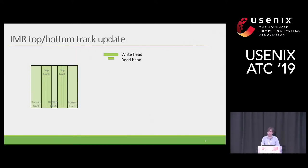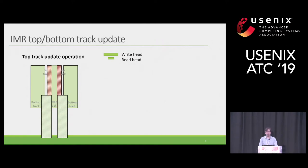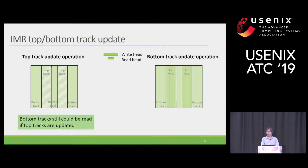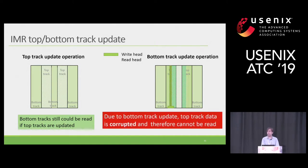Let's look at the constraint. For a top track update, as you can see in the figure, updating the top track rewrites onto the middle bottom track. However, because in IMR the read head is smaller than the write head, we are still able to read the middle section of the bottom track — no problem there. Unfortunately, this is not the case for a bottom track update. As soon as we update the bottom track, the two neighboring top tracks are overwritten. Because the read head is not small enough, we cannot read the entire section of the middle track, so data is corrupted and lost.